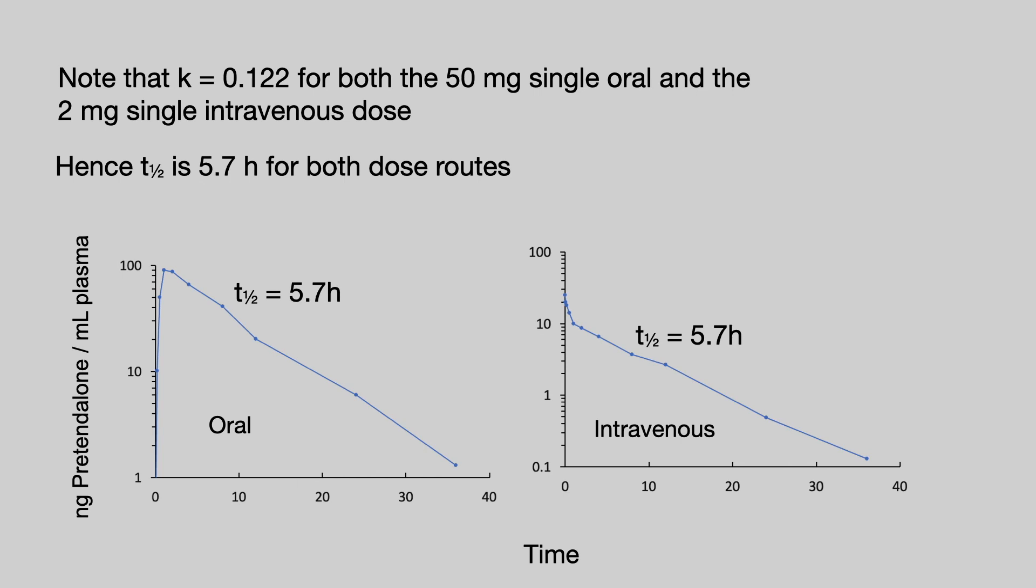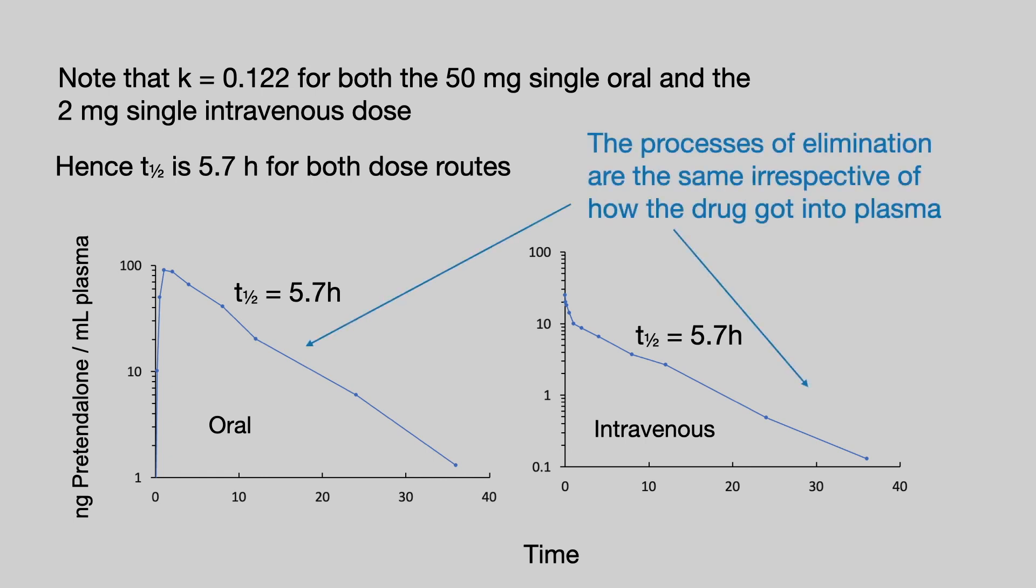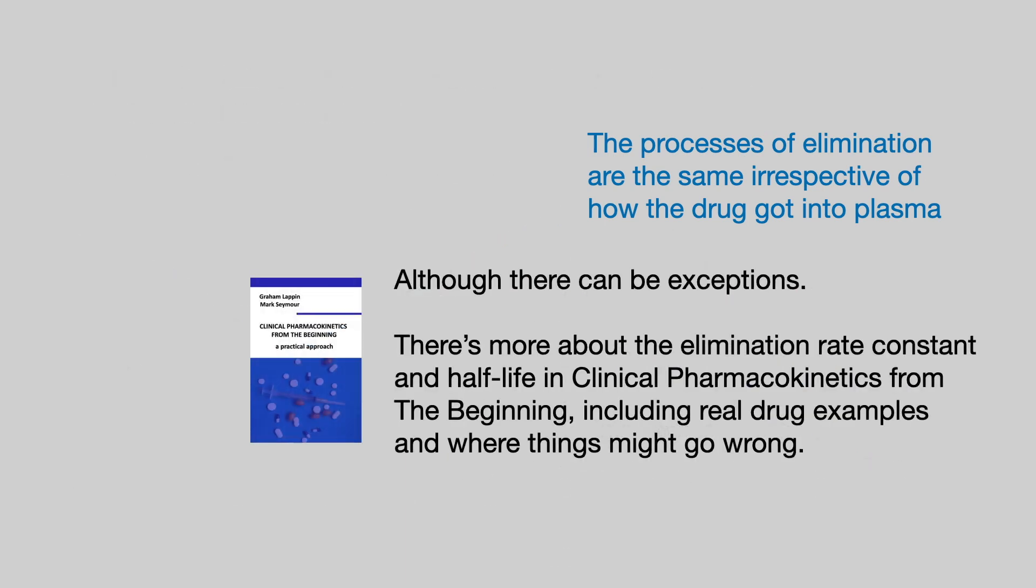That means that the half-life for the oral and intravenous dose is the same: 5.7 hours. This is not that unusual because once the drug is in the plasma, the processes of elimination are the same irrespective of how the drug got into the plasma. So it's quite a common observation between oral and intravenous doses.